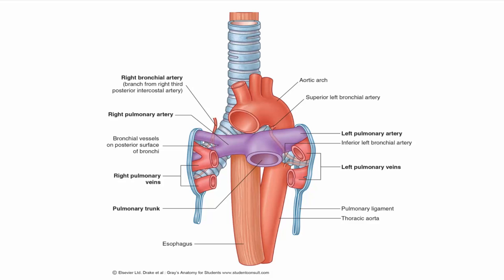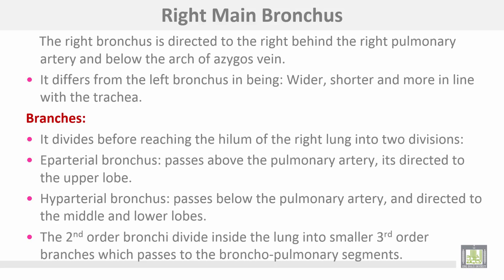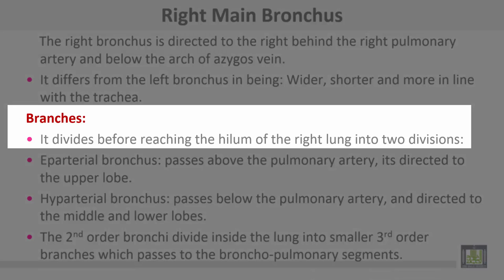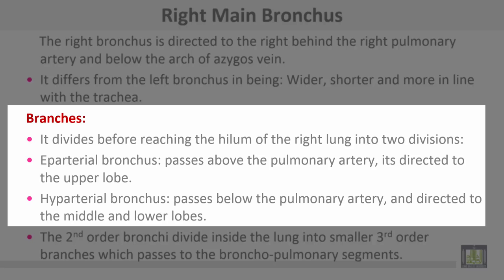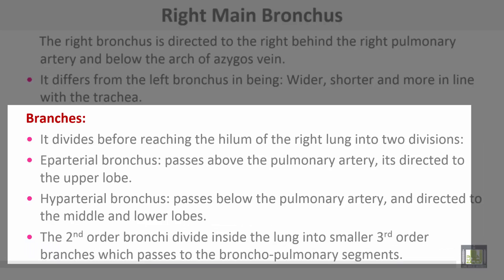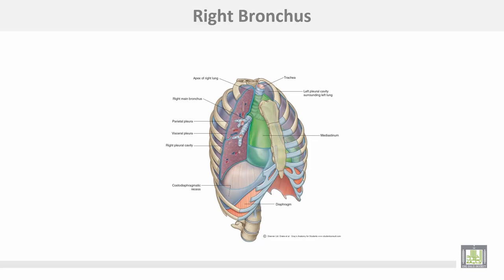The right main bronchus is directed to the right, behind the right pulmonary artery and below the arch of the azygos vein. It differs from the left bronchus in being wider, shorter, and more in line with the trachea, so any inhaled foreign body is directed to the right bronchus. Branches of the right bronchus divide before reaching the hilum into two divisions: an eparterial bronchus above the pulmonary artery directed to the upper lobe, and a hyparterial bronchus passing below the pulmonary artery directed to the middle and lower lobes. The second-order bronchi divide inside the lung into smaller third-order branches passing to the bronchopulmonary segments.